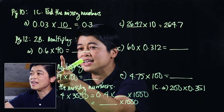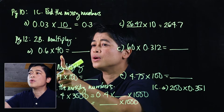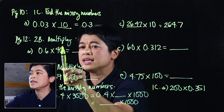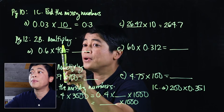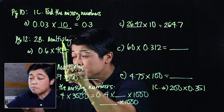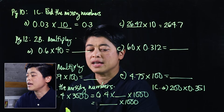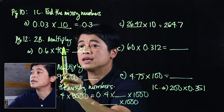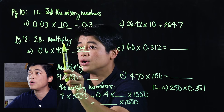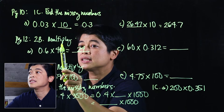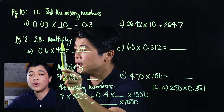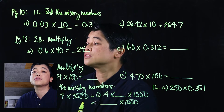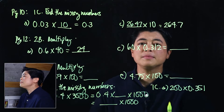For problems with zeros in the multiplier, cover the zero first and multiply without it. For example, 0.6 times 4 is 2.4, then move the decimal one place to the right — giving 24. So: cover the zero, multiply 0.6 times 4 to get 2.4, then since there's one zero, move one place to the right to get 24.